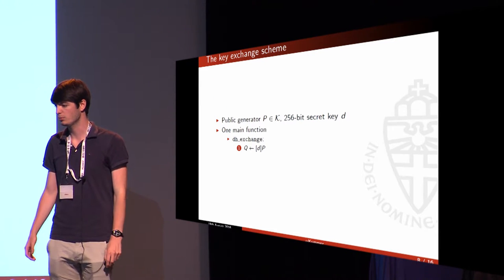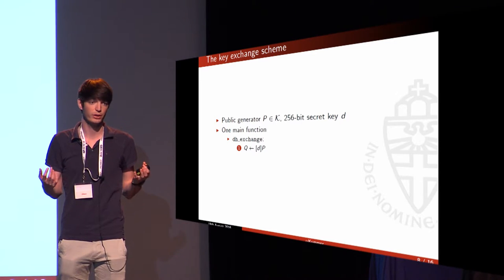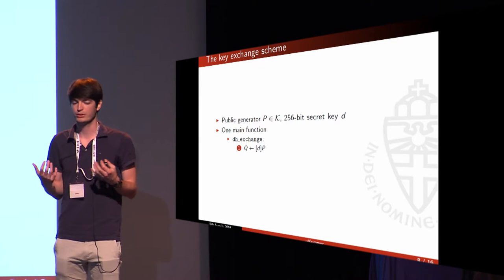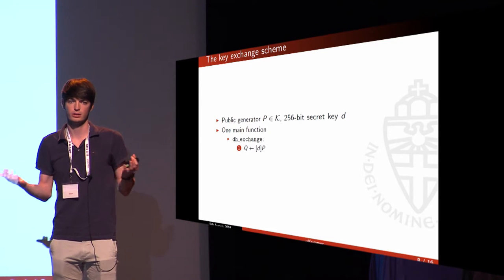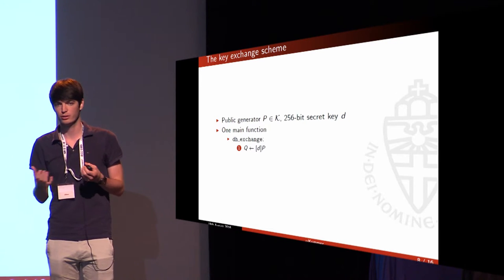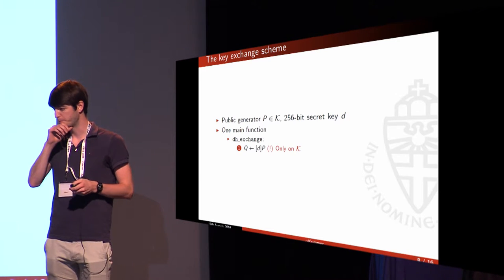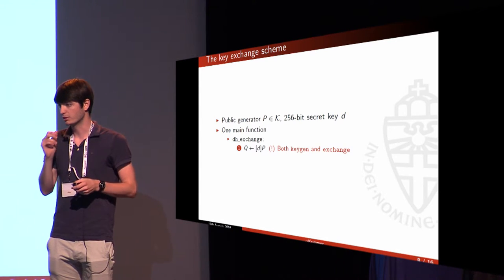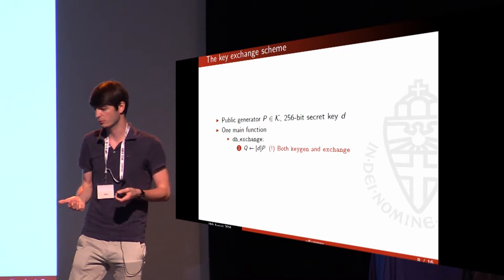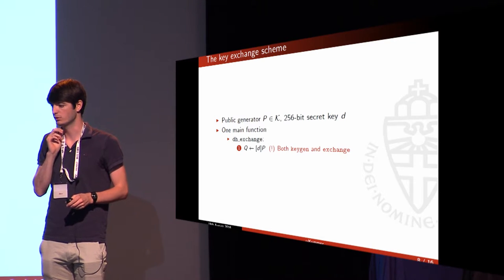The key exchange scheme is much simpler. For this we can just do stuff on the Kummer surface — our generator is just a point on the Kummer, and we have a secret key. We have two operations which are effectively the same: multiply the public generator by the secret for key generation, or multiply a public key by our secret scalar for key exchange. It's really nothing more than a simple Diffie-Hellman.